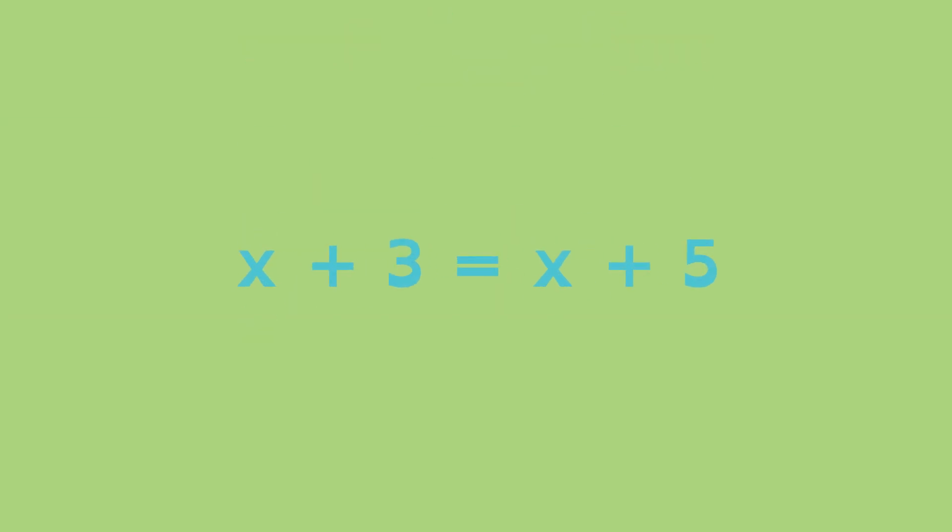Linear equations don't always have just one solution. In this equation, the solution has to be a value for x which when added by 3 gives the same answer as when added by 5. But the same number can't be added by 3 and 5 to make the statement true. This equation has no solution.